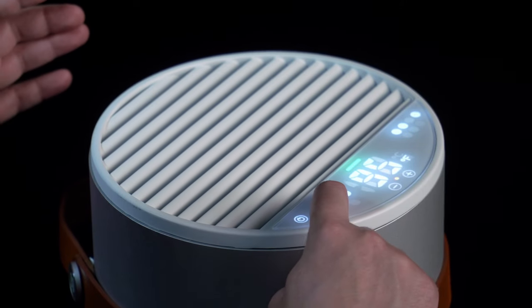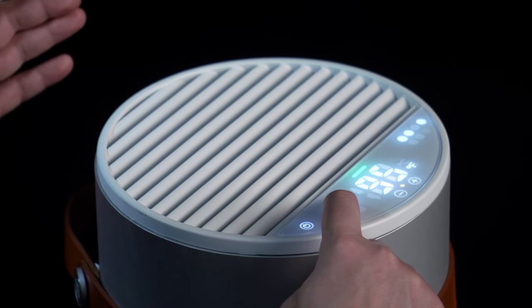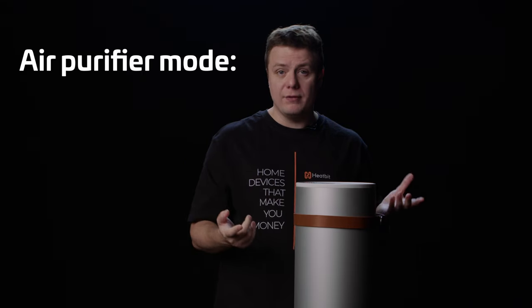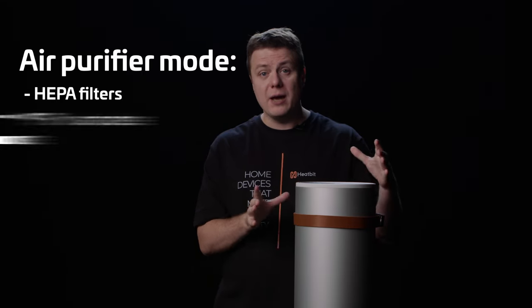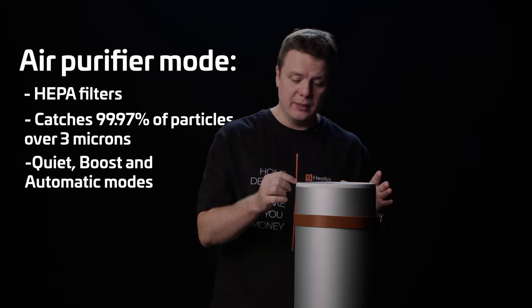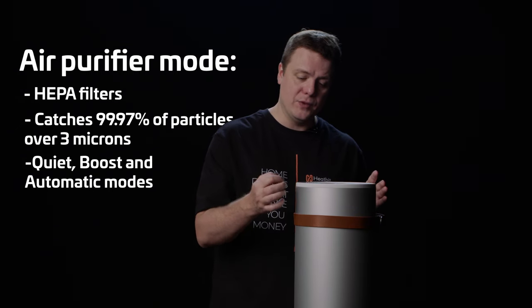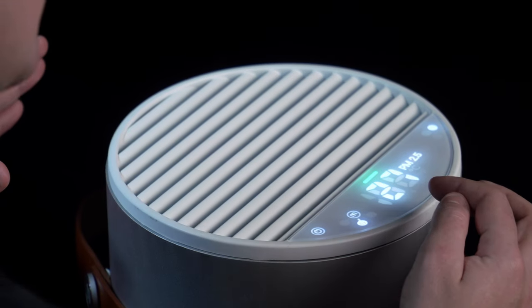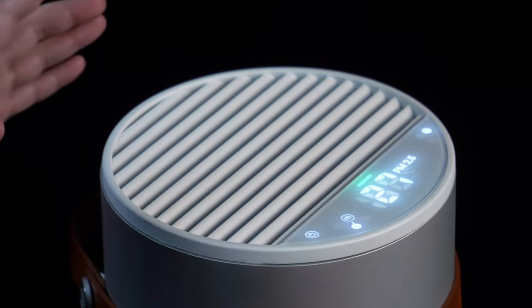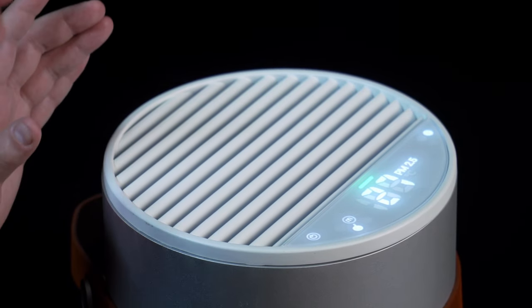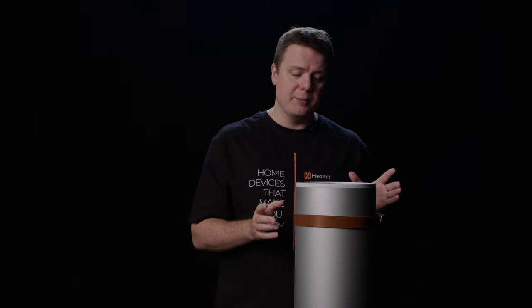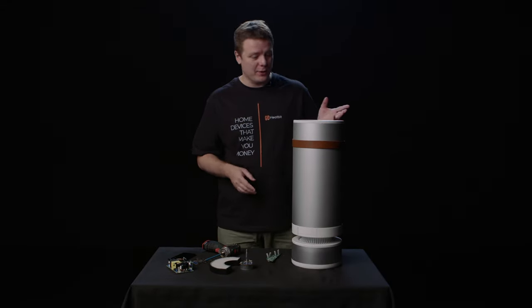If you do a long press, it will change the mode into the air purifier mode. This would be the night mode where it's very, very quiet. You can see that right now we've got 427 of PM 2.5. That's actually very good air quality, so you don't need too much purification right now. I guess this thing has been working here for some time. So let's take this thing apart.